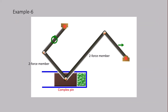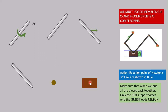This is a multi-force member because it has a pin, a pin, and a couple. There are two two-force members and a multi-force member that has a pin, a pin, and a force. This is a complex pin because it interacts with two members and a piston. So we need five free body diagrams for the members plus one for the complex pin and one for the piston — six total. The two multi-force members are one with a couple and one with a force. These are the two-force members. This is the complex pin, and this is the piston.